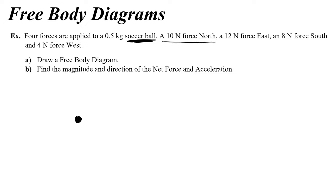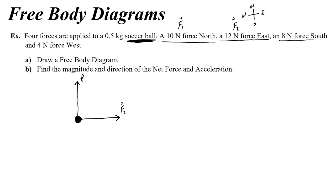Then we draw all of the forces coming out of the dot. The 10 newton force north goes up — we call this F1. A 12 newton force east goes to the right and is slightly bigger than F1 because 12 is bigger than 10 — that's F2. An 8 newton force south goes down, slightly smaller than F1 — that's F3. And the last one, a 4 newton force west — the smallest — is F4. That's our free body diagram.